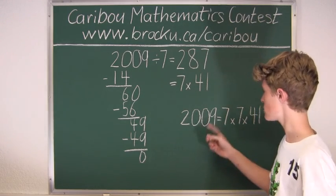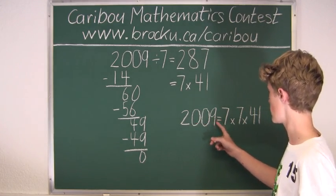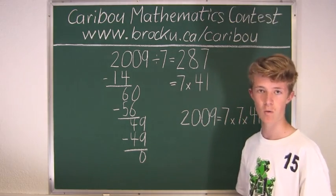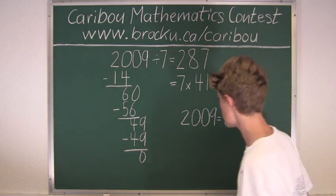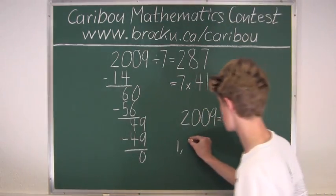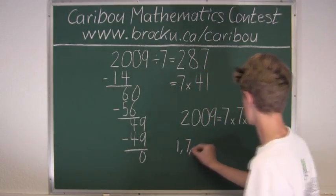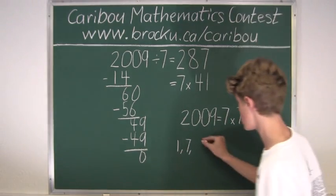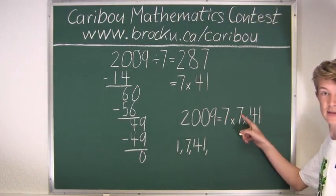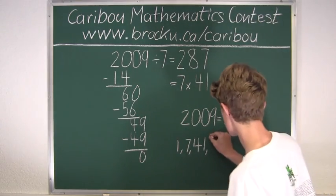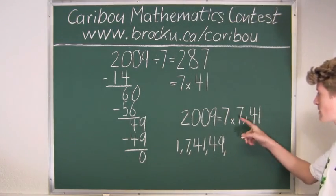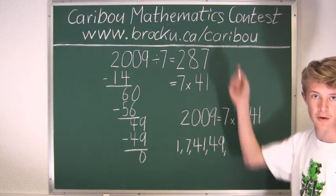So to find the factors of 2009, we will have to find all combinations of 7, 7 and 41. So of course we know 1 is a factor of 2009. And then 7 and then 41. Then we have 7 times 7, which is 49. Then we have 7 times 41, which we know is 287.